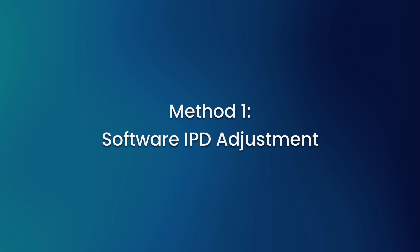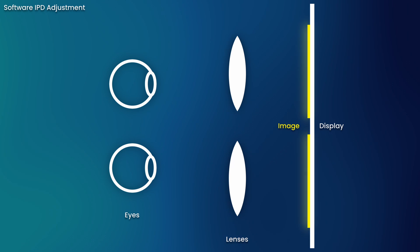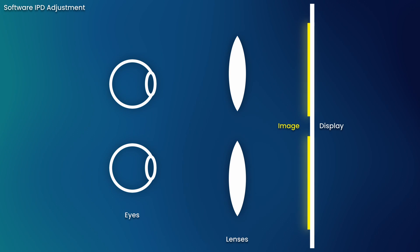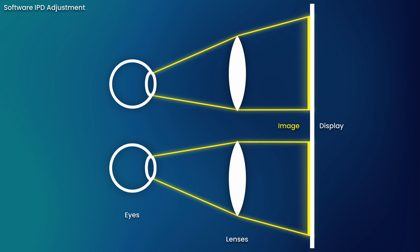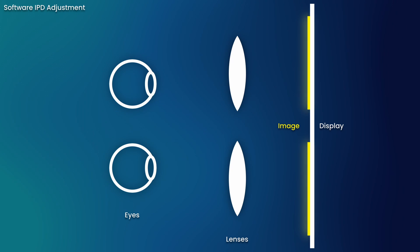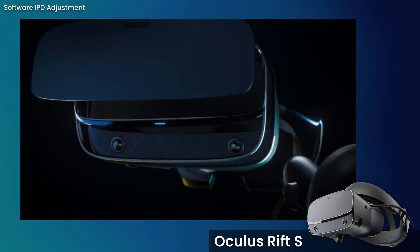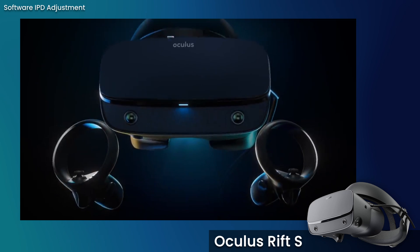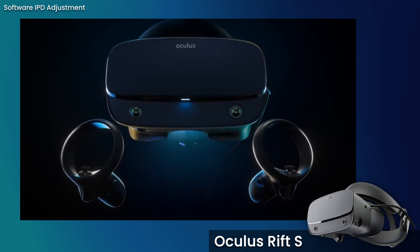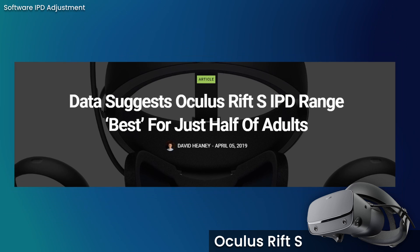Through software: this method is the simplest and cheapest to implement, and adjusts to the user's IPD by moving the view around on the display panel. This is by far the worst method for accommodating IPD, and due to the lack of lens repositioning, users outside an ordinary IPD range will generally miss their headset's sweet spot and see a blurrier image than they would otherwise. This system was used by headsets like the Rift S, and completely rules out those devices for users with very wide or very narrow IPDs.